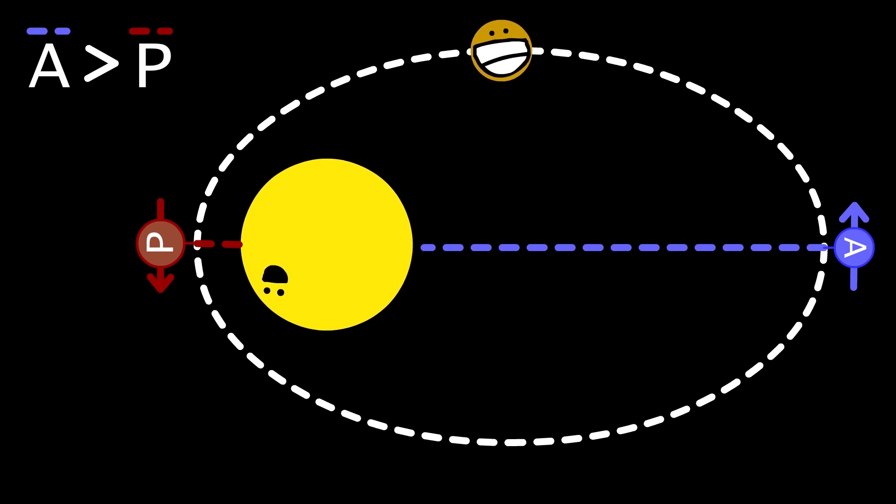In an orbit, the closer an object is to a body, the faster that object will go relative to the body. So, an object moves slowest at apoapsis and fastest at periapsis.